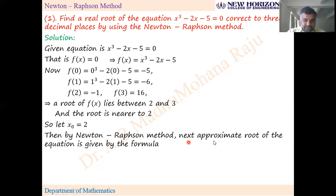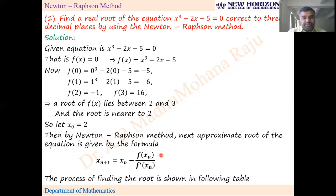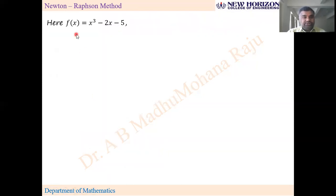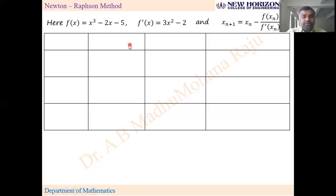Then by Newton-Raphson method, the next approximate root of the equation is given by the formula xₙ₊₁ = xₙ - f(xₙ) / f'(xₙ). We'll proceed the remaining steps in tabular form. We need f(x) and f'(x). Since f(x) = x³ - 2x - 5, the derivative is f'(x) = 3x² - 2.